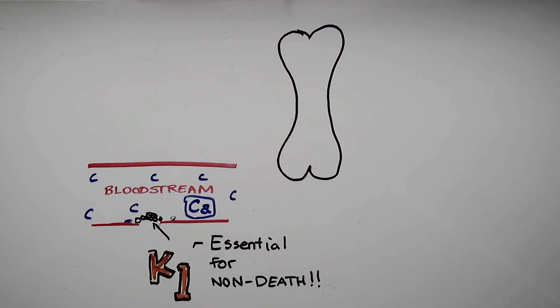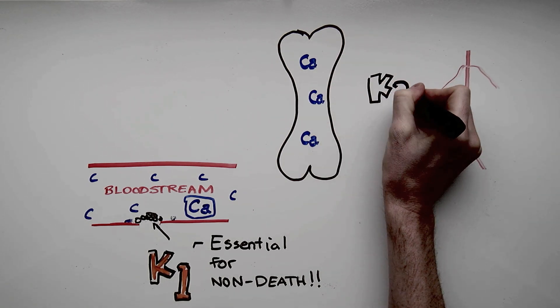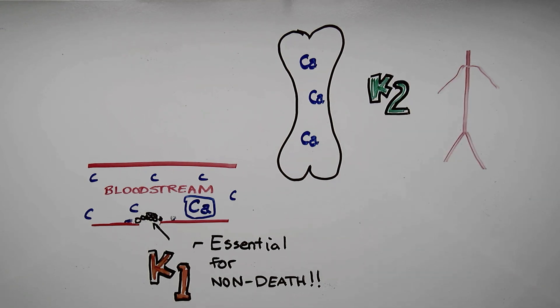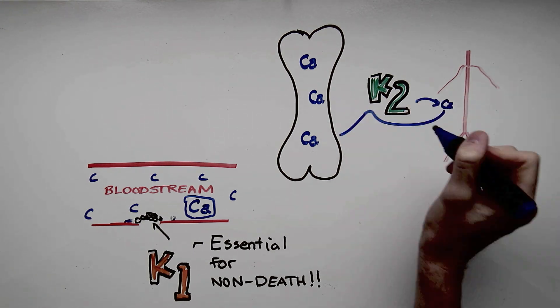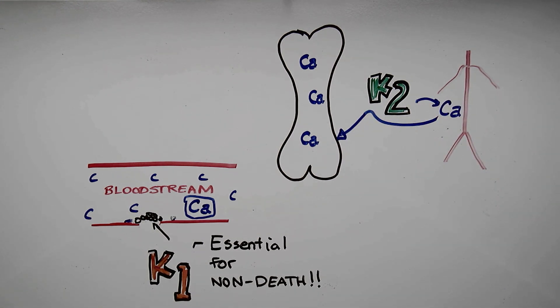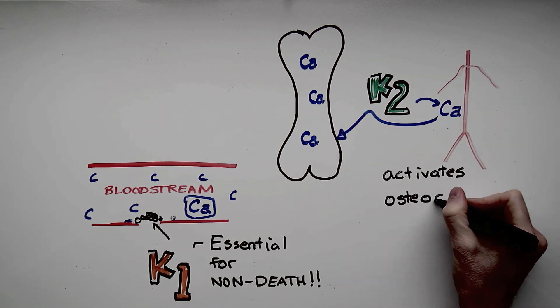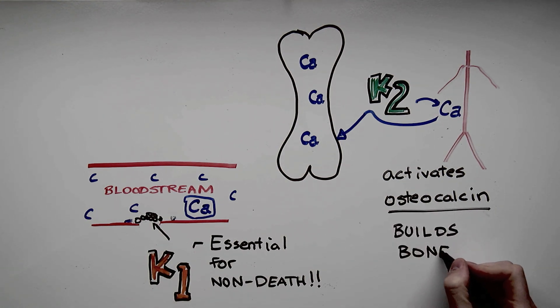Yeah, so let's draw our bone again. We've got calcium in our bone and we've got calcium in our bloodstream. Well, how does it get back and forth? It can't do it by itself. So what K2 does is it activates a protein called osteocalcin, which helps the calcium get into our hard bone instead of staying in our arteries.